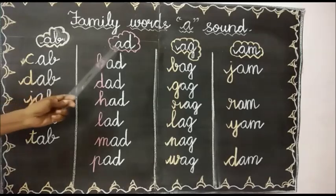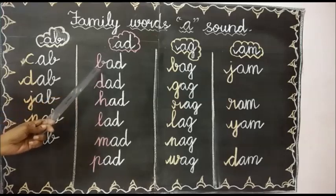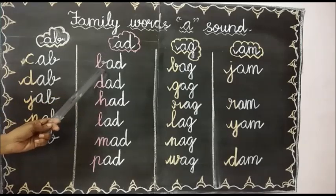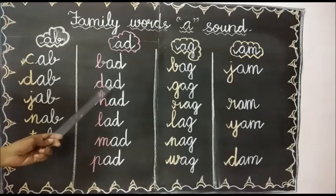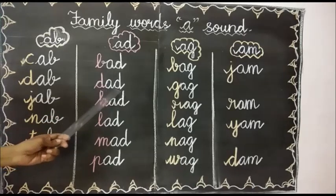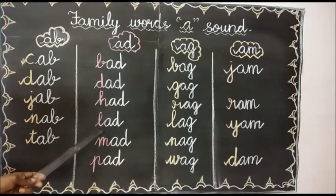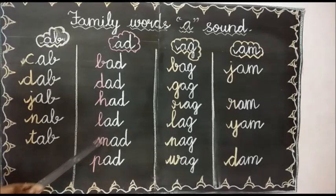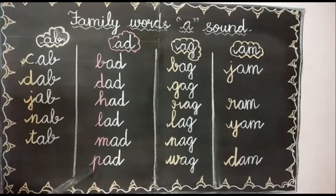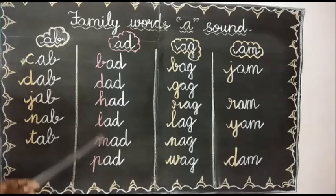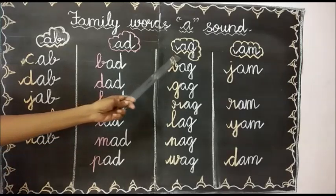Next we are going to see the AD family. First one: bad. B-ad, bad. Next one: dad. D-ad, dad. Next one: had. H-ad, had. What is the next one? Lad. L-ad, lad. Next one: mad. M-ad, mad. Next one: pad. P-ad, pad.